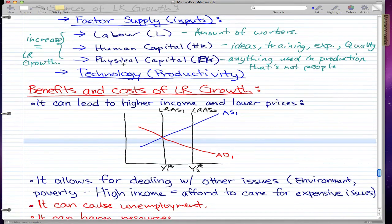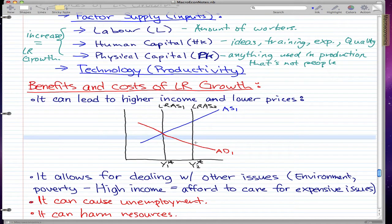labor, human capital, or physical capital got better. So pretty much aggregate supply moved right—it got better. And this will be the new point, which can lead to higher income and lower prices. This was